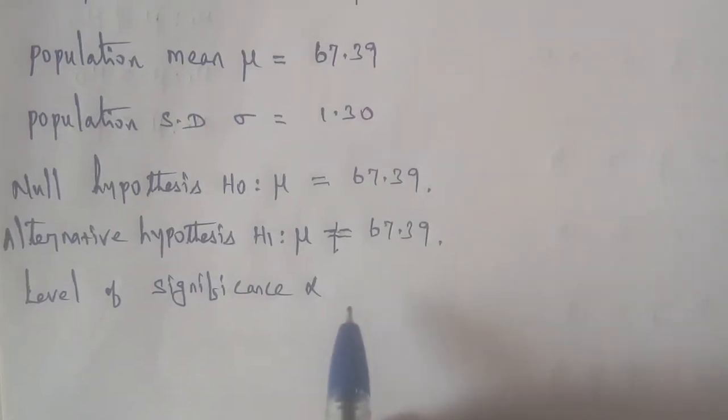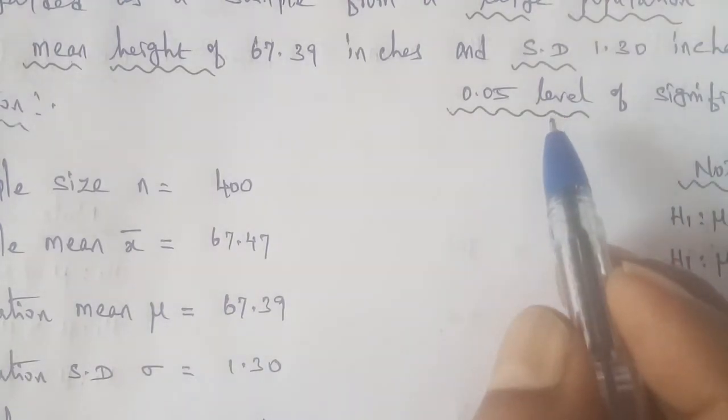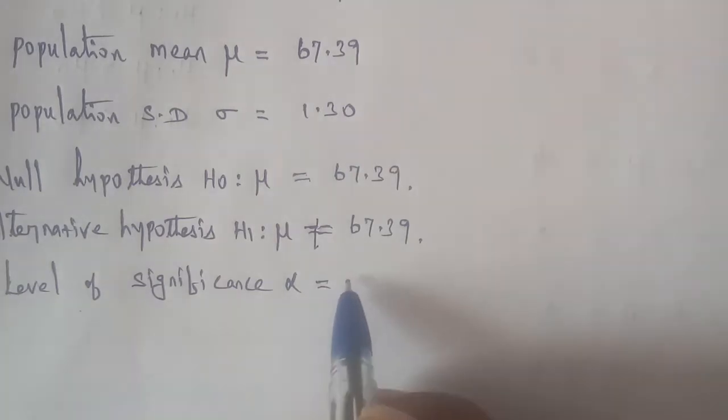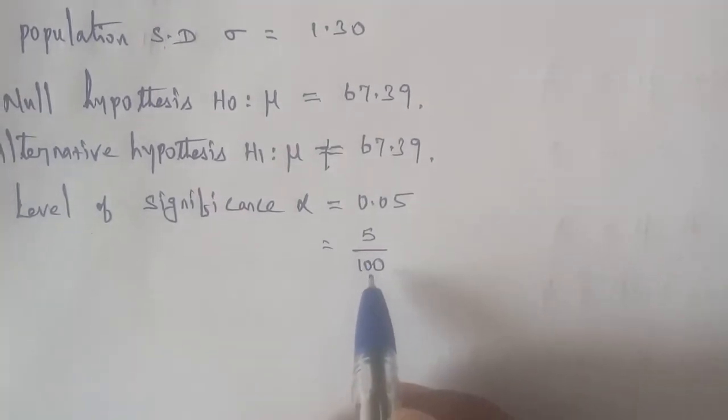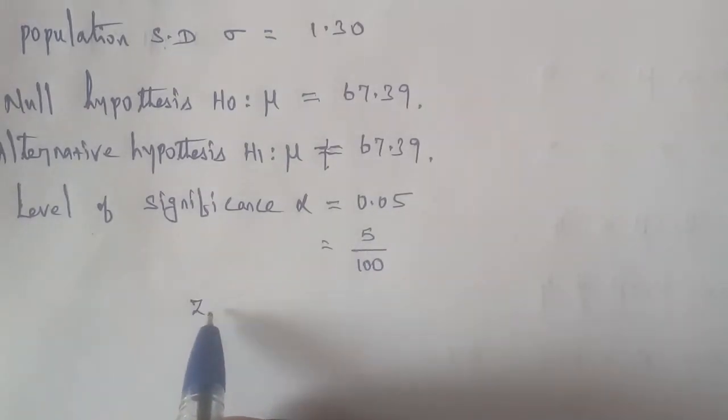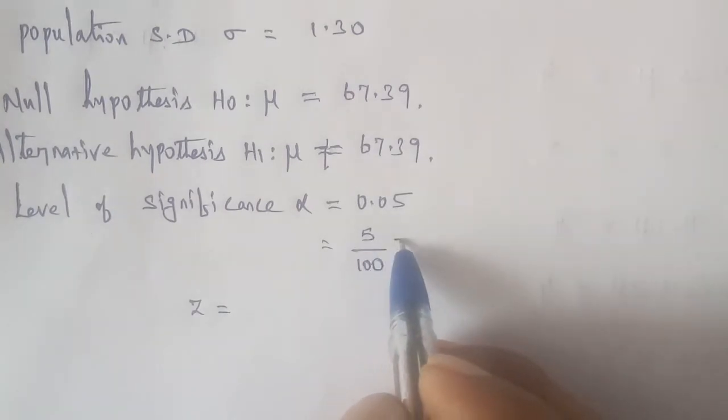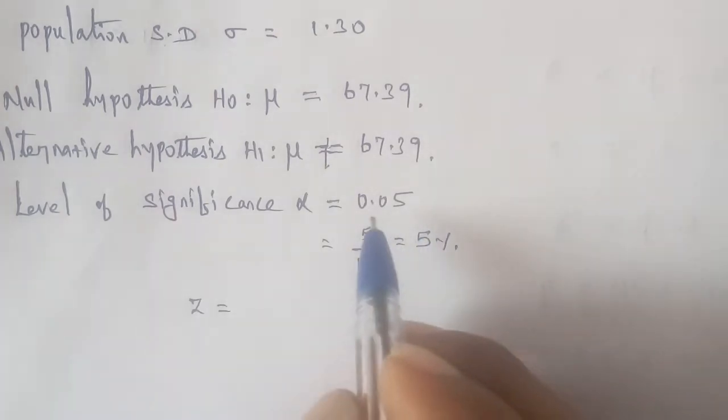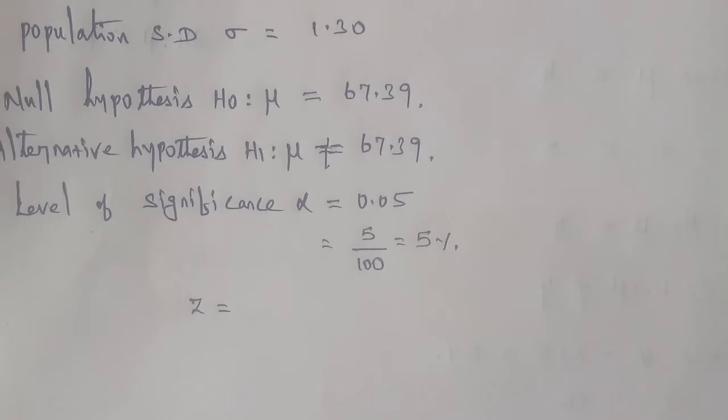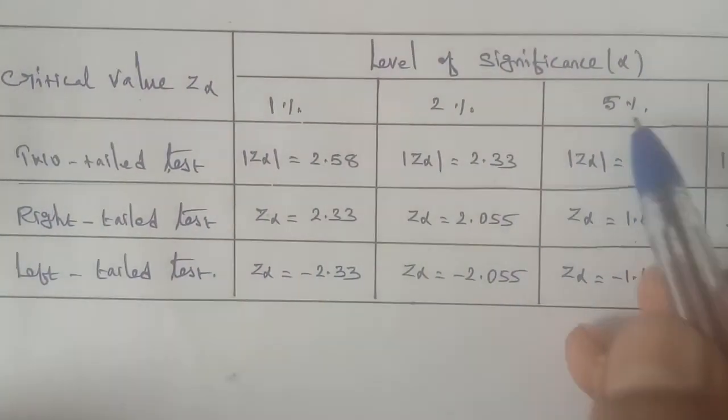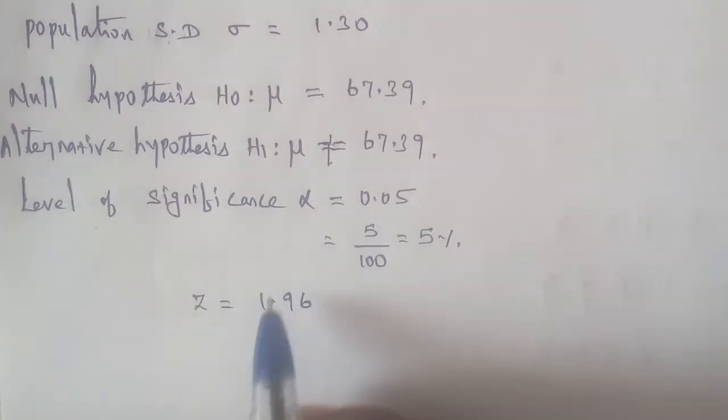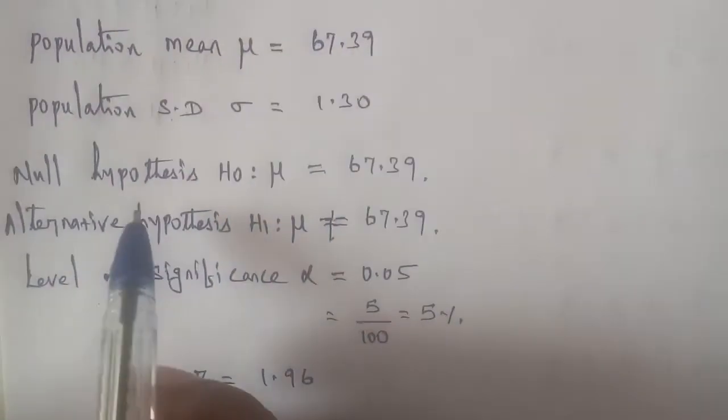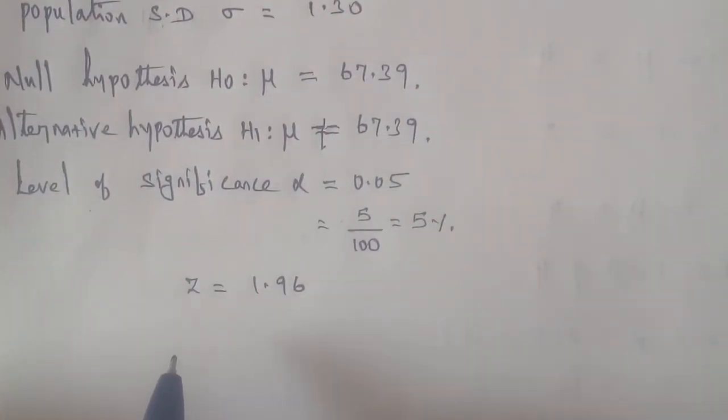Level of significance: given in the question as 0.05, so α equals 0.05, which is 5 by 100, or five percent. At five percent, the critical value from the table is 1.96. So the critical value is 1.96.